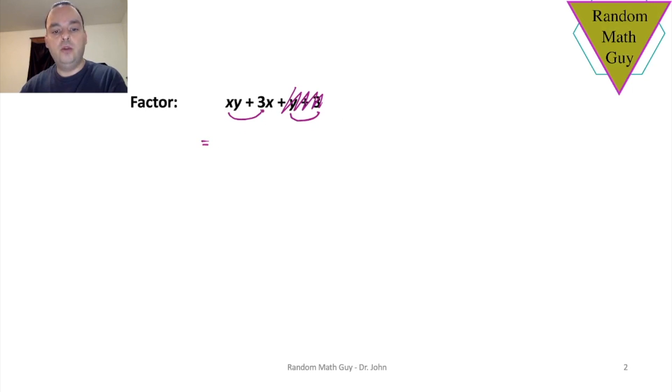In the first binomial, what is common? Well, they both share an X, and if you take the X out, you're left with Y plus 3. That's halfway done.